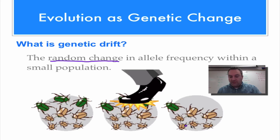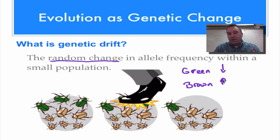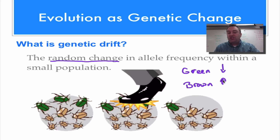Looking at the result, we've totally changed the allele frequency. The green allele has decreased in frequency and the brown allele has increased in frequency — so we have evolution, a change in allele frequency. Was it caused by natural selection? No, it's just a random event.